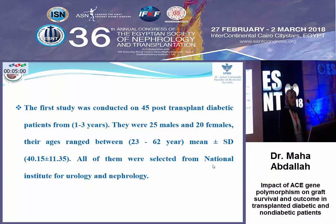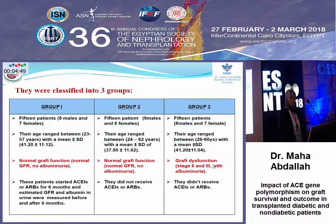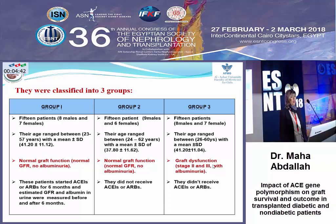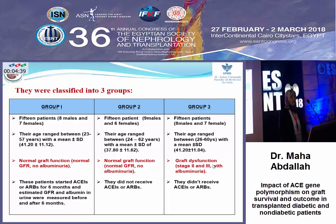This study includes two sub-studies. The first study was conducted on 45 post-transplant diabetic patients, all selected from the National Institute of Urology. They were classified into three groups: Group 1 included 15 patients with normal graft function who started ACE inhibitors or ARBs for six months, with eGFR and urine albumin measured before and after. Group 2 included 15 patients with normal graft function who did not receive ACE inhibitors or ARBs. Group 3 included 15 patients with graft dysfunction who did not receive ACE inhibitors or ARBs.